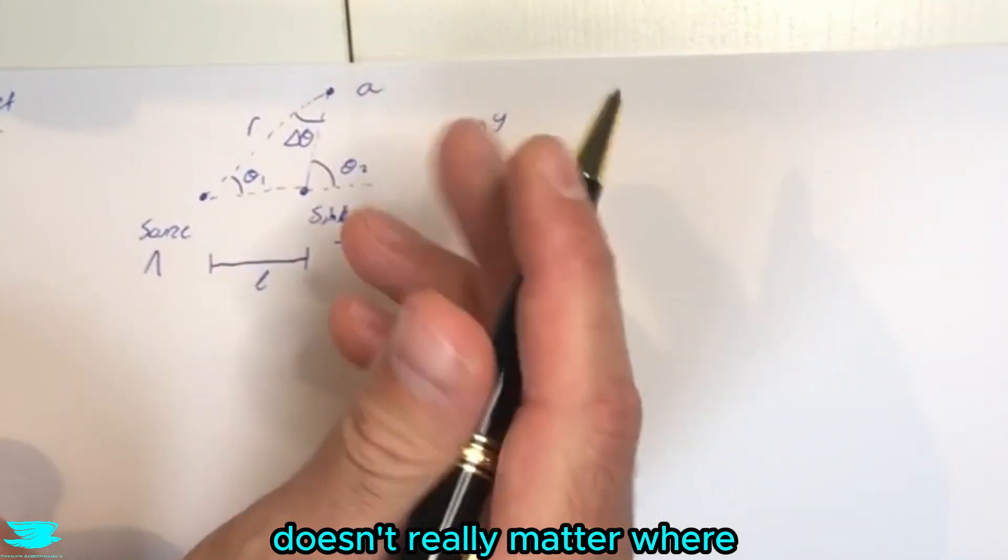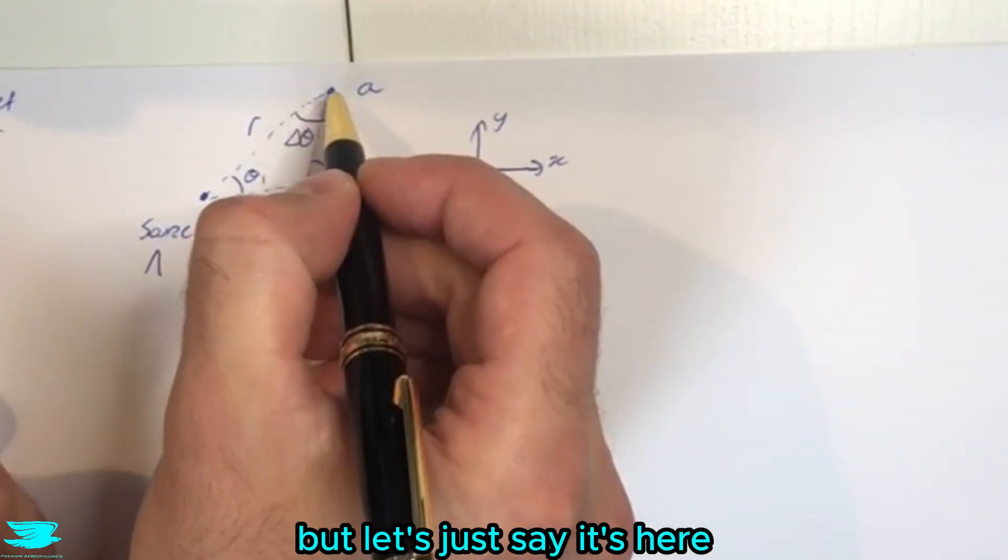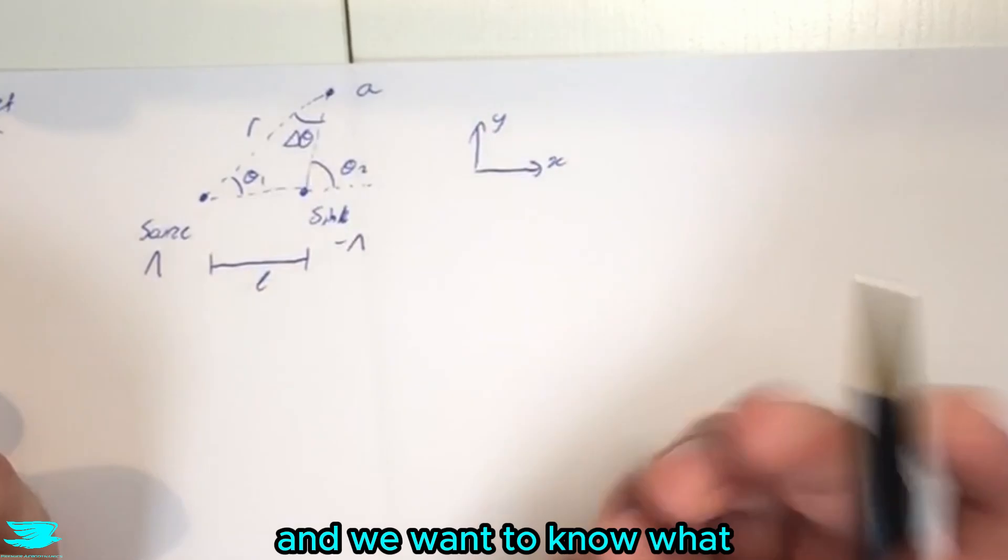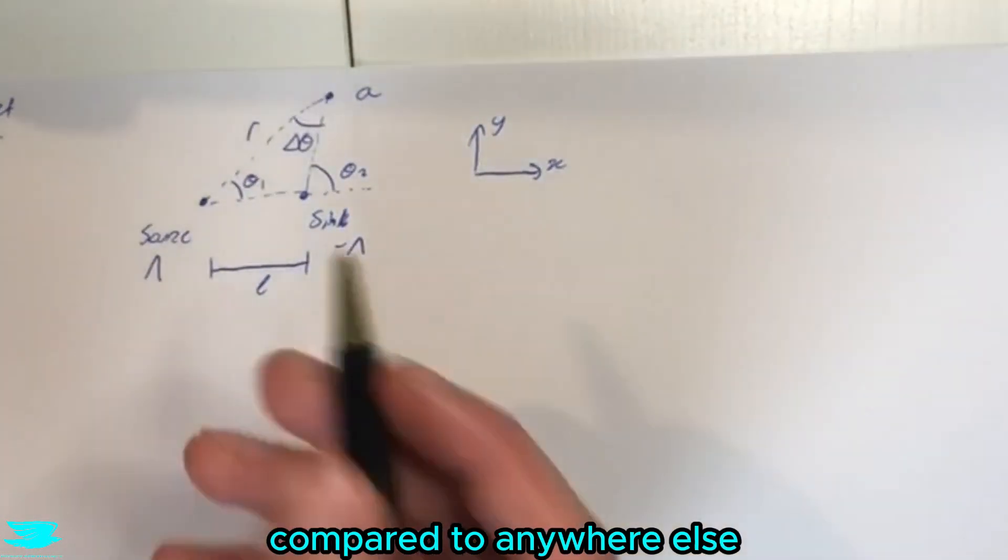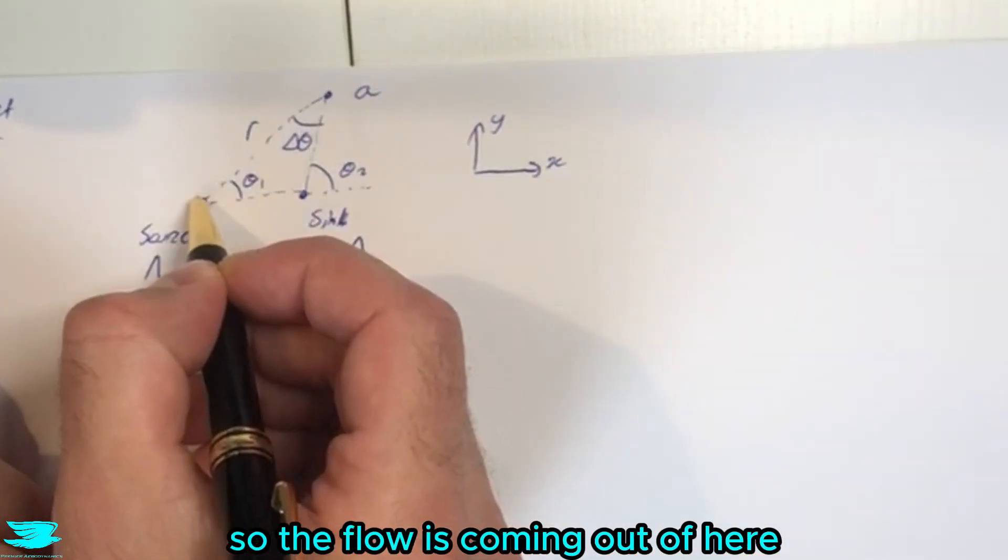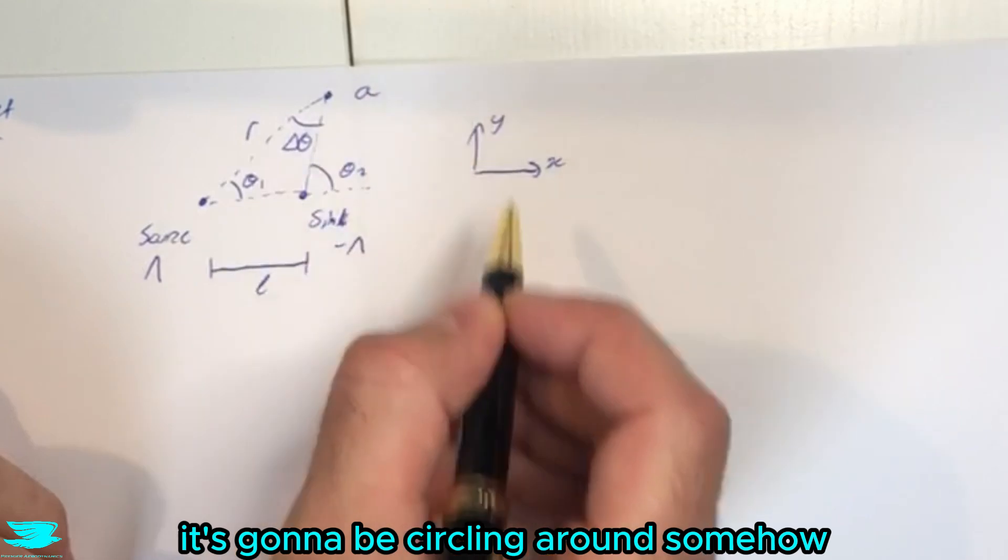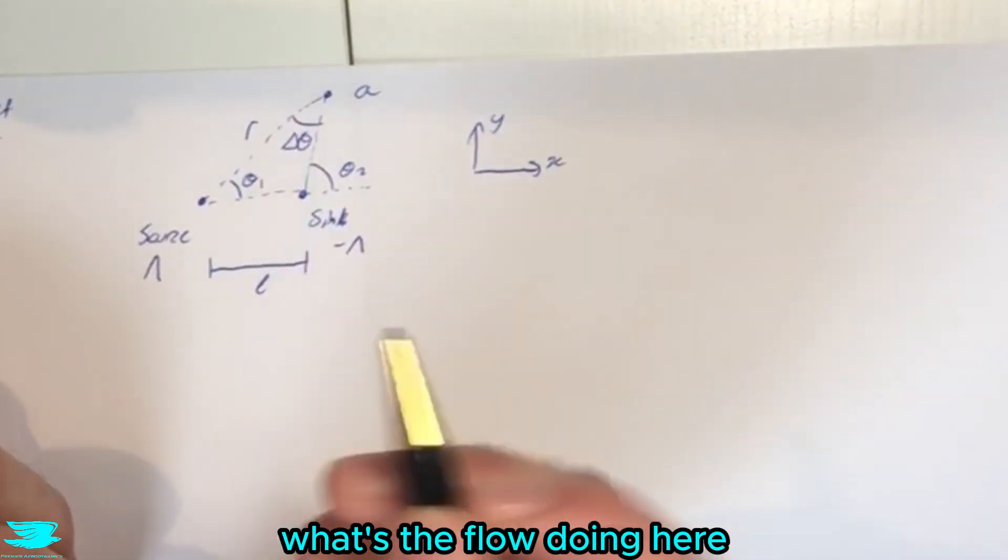And at some point in the flow it doesn't really matter where, we're just going to call this A. It could be anywhere around here but let's just say it's here. We have this point and we want to know what the flow is doing here compared to anywhere else. So the flow is coming out of here, it's going to be circling around somehow. How does it go through this point? What's the flow doing here?